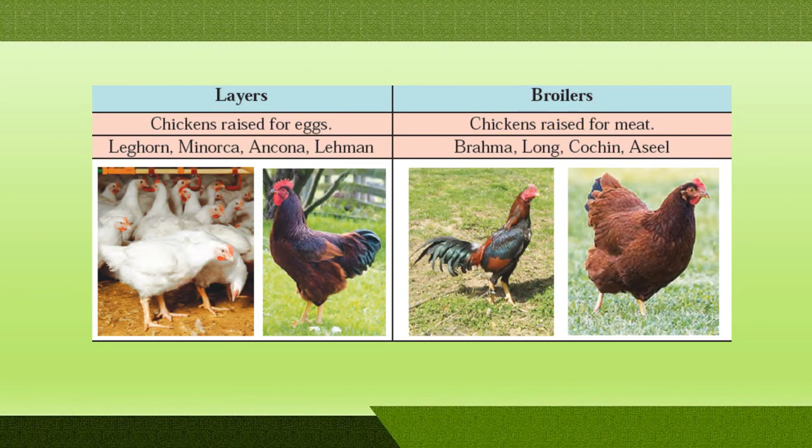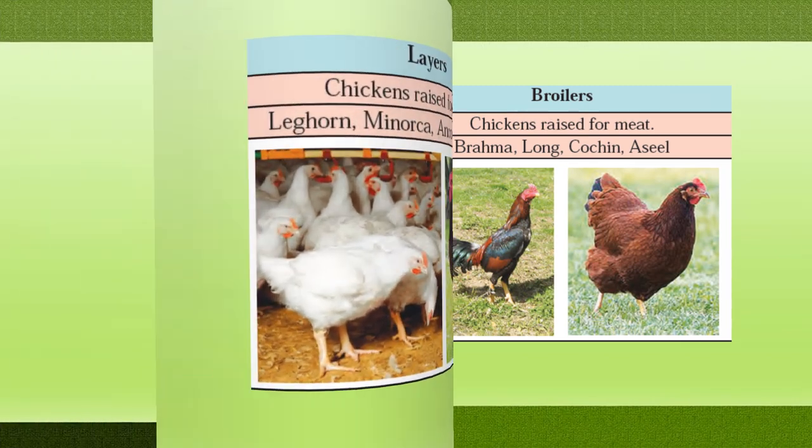Chickens are of two types: layers and broilers. Those raised for eggs are called layers — examples include Leghorn, Minorca, and Cornish. Those raised for meat are broilers — examples include Brahma, Langshan, Cochin, and Asil. Both types represent important agro complementary occupations.